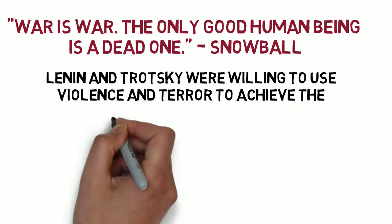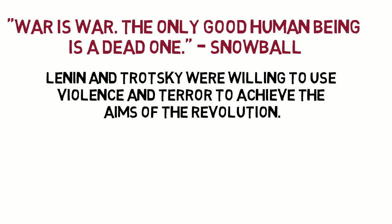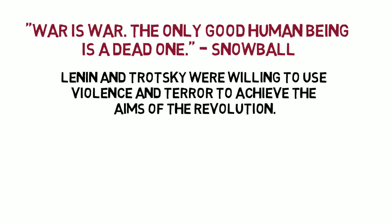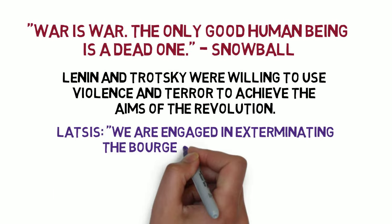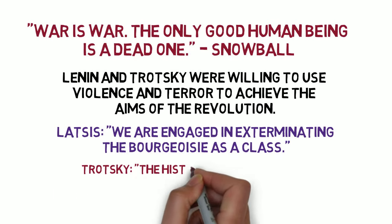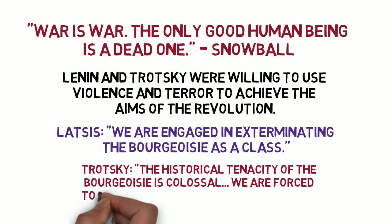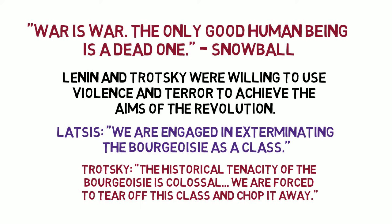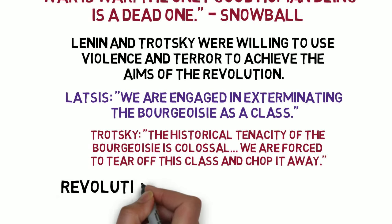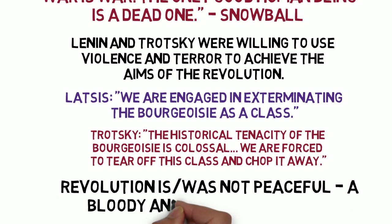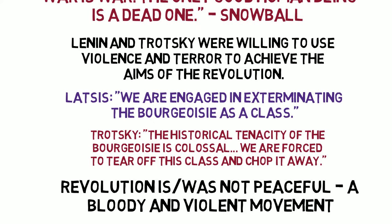Lenin and Trotsky were willing to use violence and terror to achieve the aims of the Russian revolution — this is known as revolutionary terror. Latsis, a leader of the Soviet police, once wrote: 'We are engaged in exterminating the bourgeoisie as a class.' Trotsky also wrote: 'The historical tenacity of the bourgeoisie is colossal. We are forced to tear off this class and chop it away.' Tenacity means they really stick — they're very difficult to remove. Both leaders took quite a violent approach to the revolution, and that is definitely shown in Orwell's novel. Orwell aptly demonstrates that revolution is not peaceful — it is and was a bloody and violent movement. People died; people were willing to kill to achieve their aims. The pigs are the animals whose ideas most closely reflect human views.